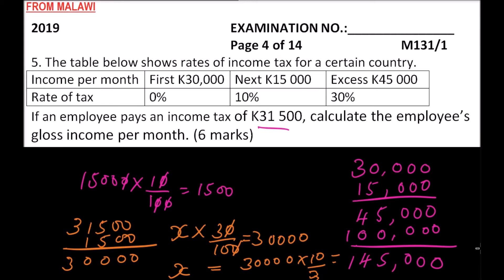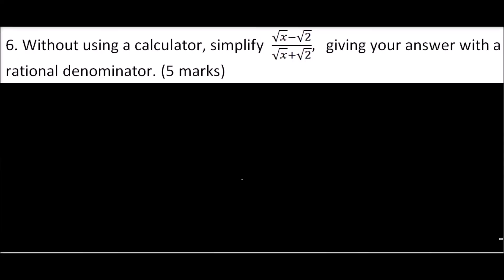We add K100,000 to the amount the employee was already earning. This gives a total of K145,000. That is the gross income the employee was earning in order to pay K1,500 in tax. Remember, different countries have different tax rates, so always work according to the table given.